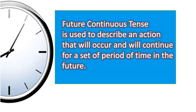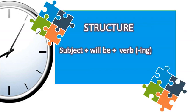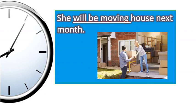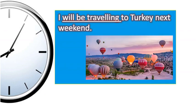Future continuous. This tense is used to describe an action that will occur and will continue for a set period of time in the future. The structure is subject plus will be plus a verb ending in -ing. For example: I will be going to work tomorrow at 8 a.m. She will be moving house next month. I will be travelling to Turkey next weekend.